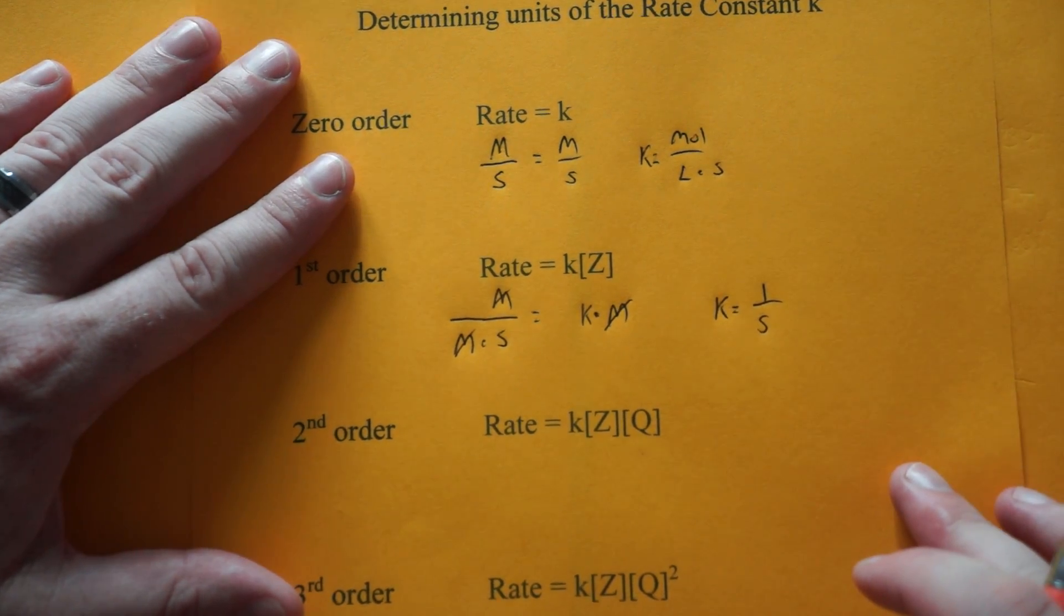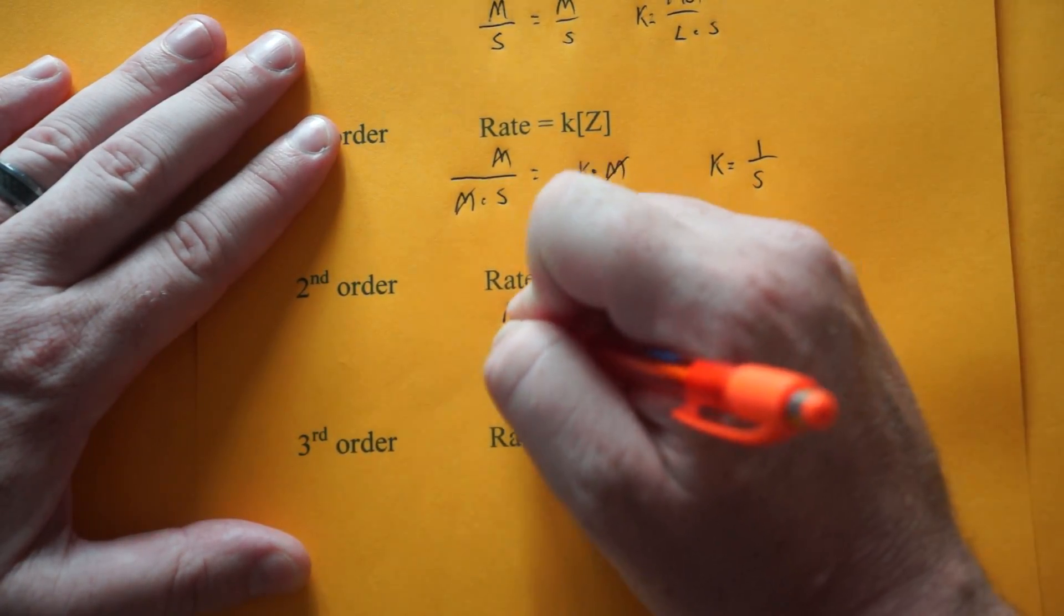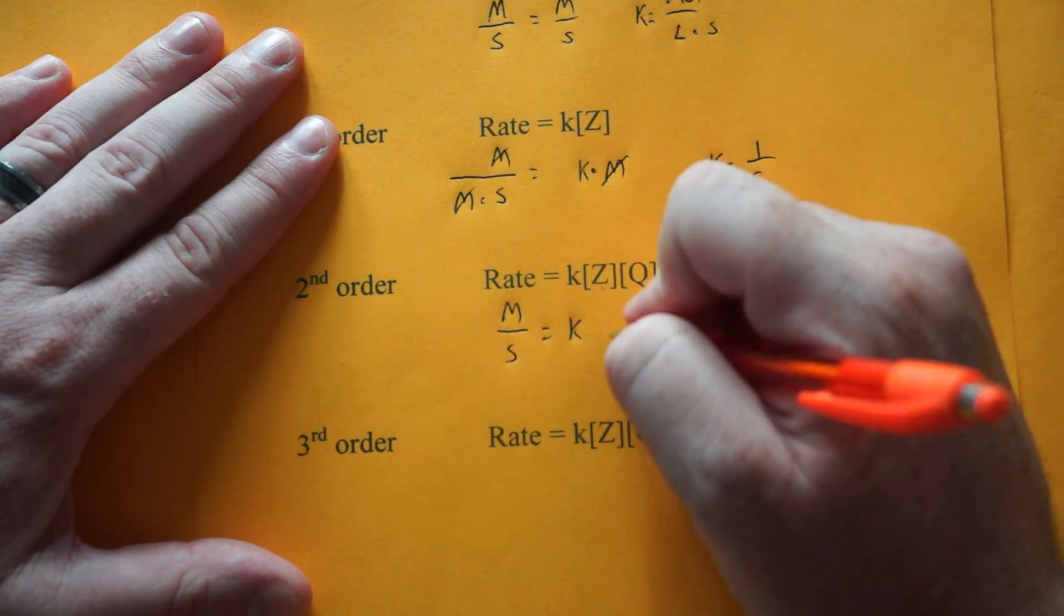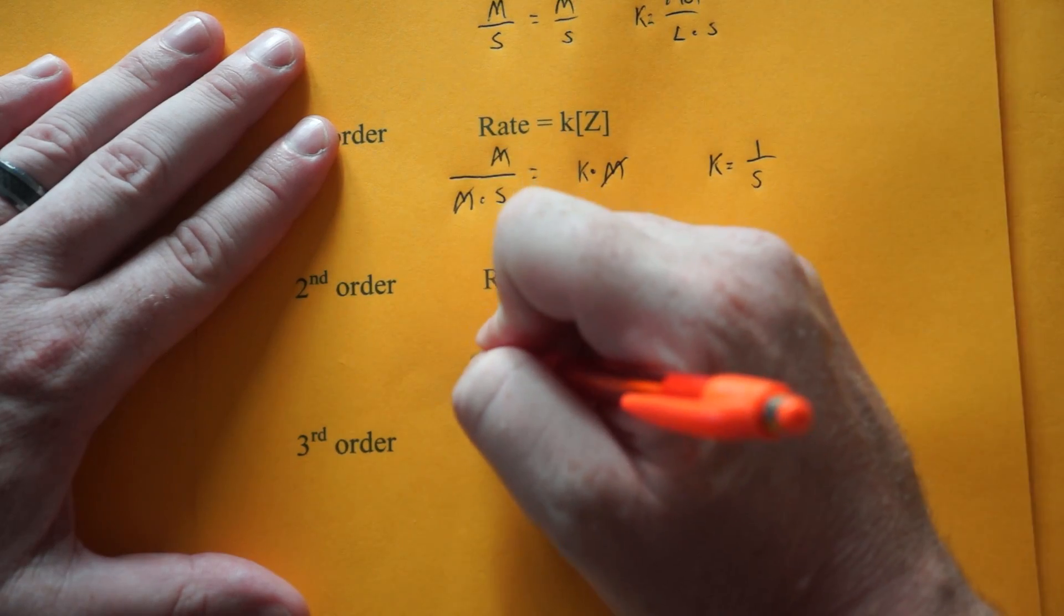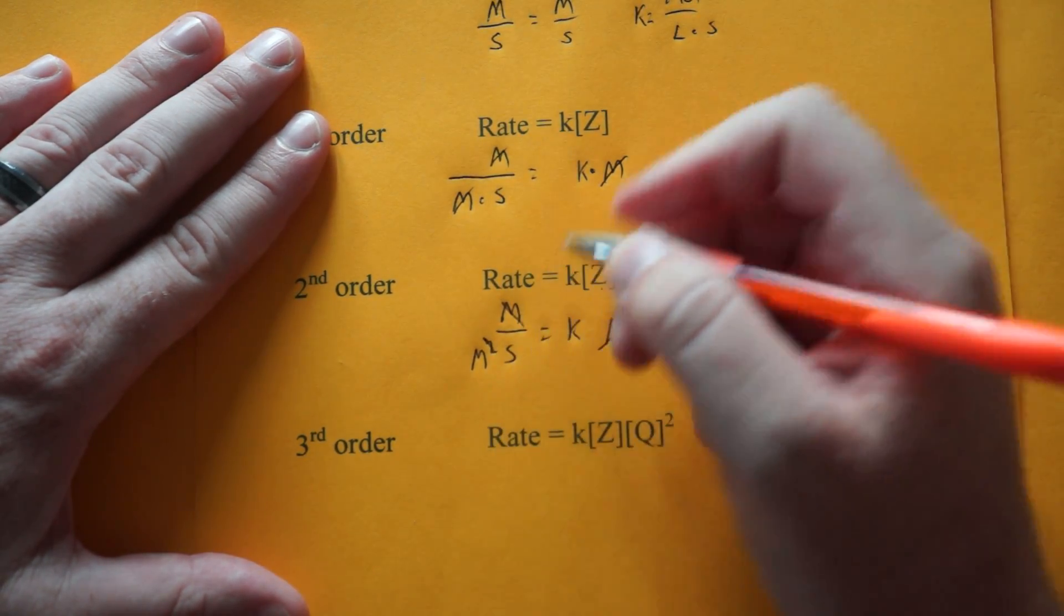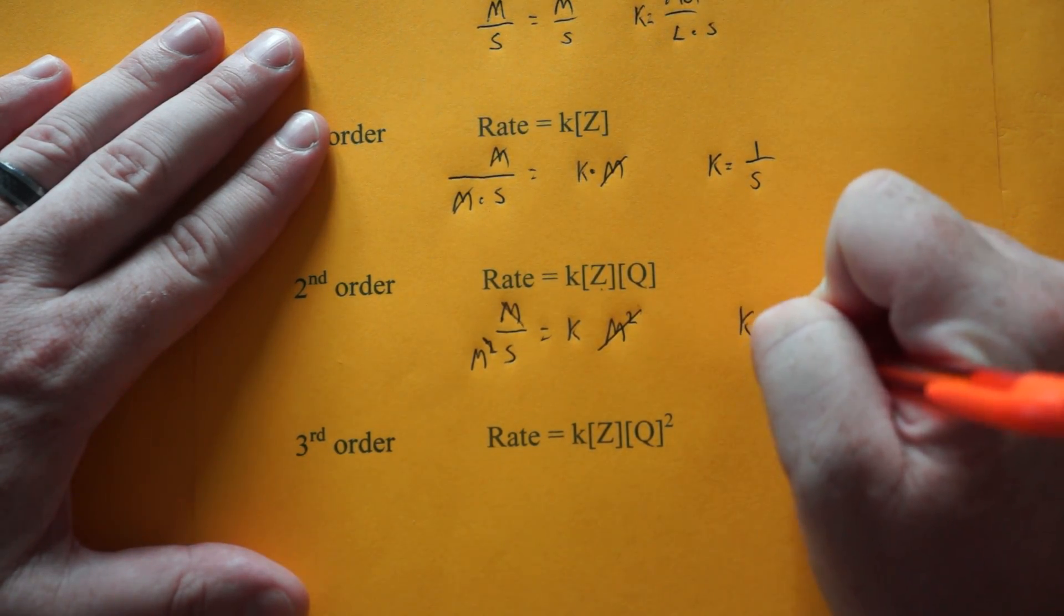If you're given minutes, it's 1 over minutes. I just pick seconds. For a second order reaction, it's still molarity per second. And now these two together is molarity squared. So you bring this over the other side. And we're only going to knock out one of the molarities. So k is equal to 1 over molarity seconds.